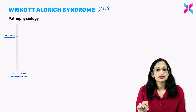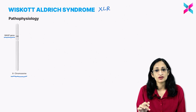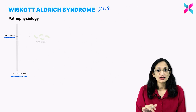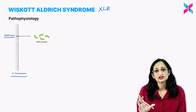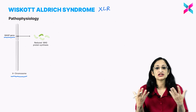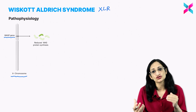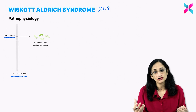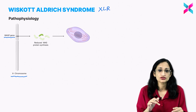The WAS gene is located on the short arm of the X chromosome. Normally, the WAS gene produces the Wiskott-Aldrich syndrome protein, or WASP protein. If this WAS gene is mutated, there will be reduced synthesis of the WASP protein.